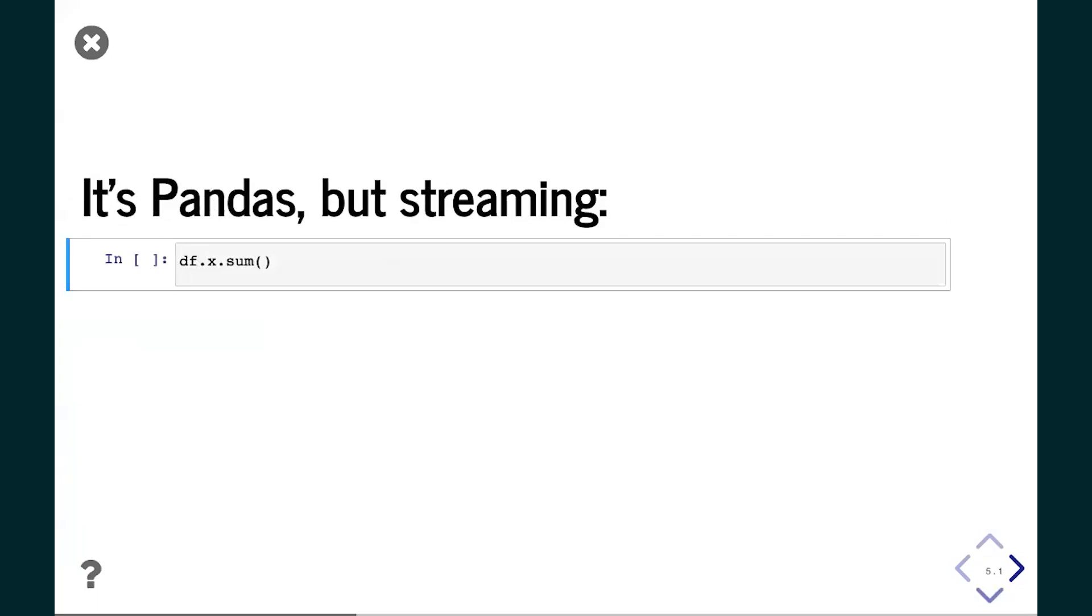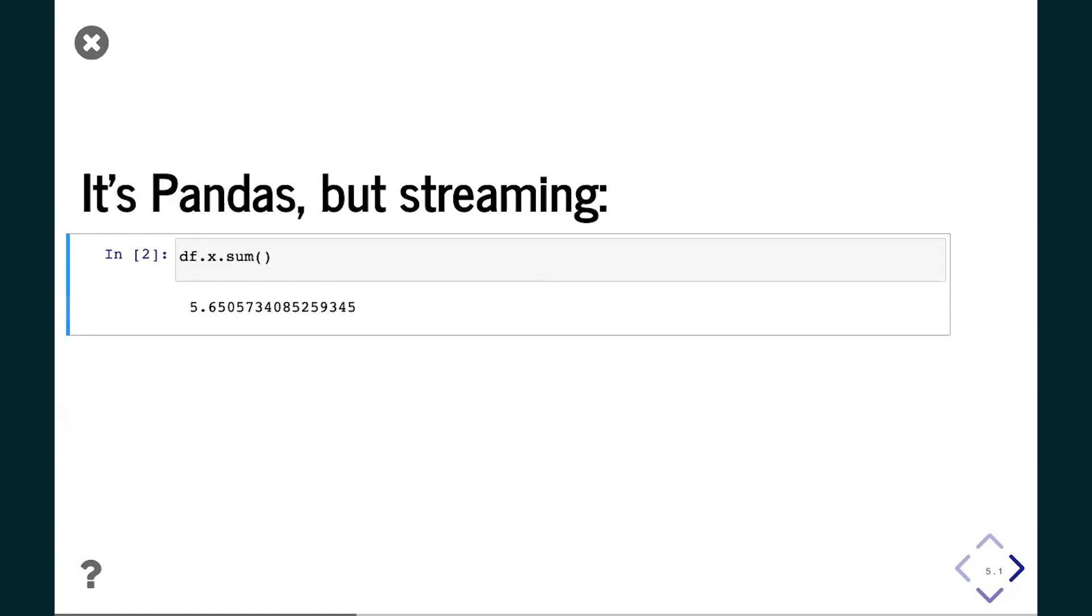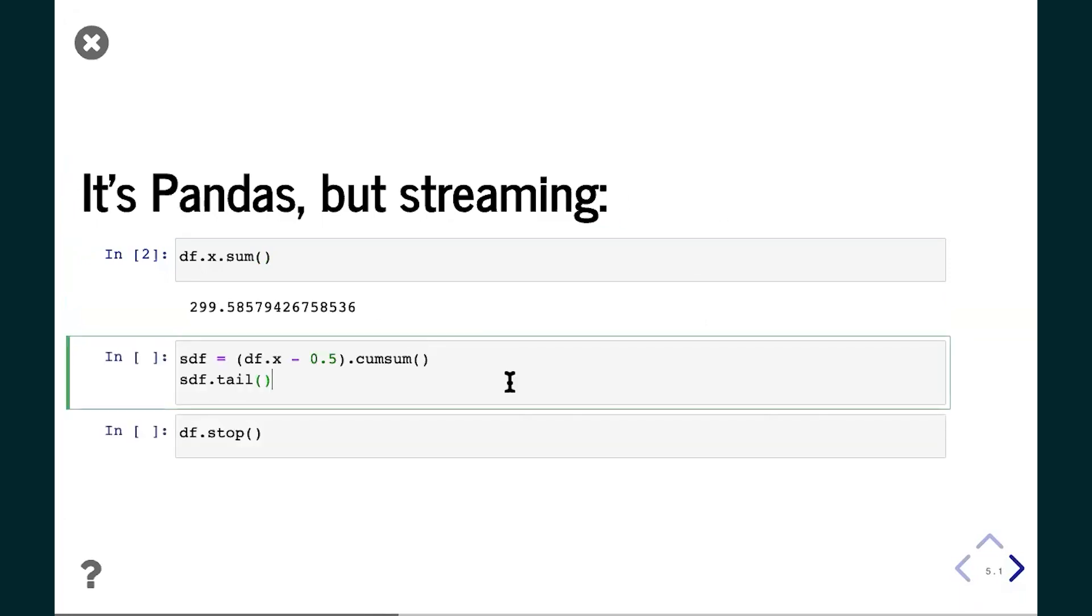A Streamz dataframe like the one we just created is Pandas. So you can use normal Pandas operations on it. If you know the Pandas API, you're already equipped to work with it. In this case, we're just calculating the sum, and of course the sum keeps changing over time when new random values come in.